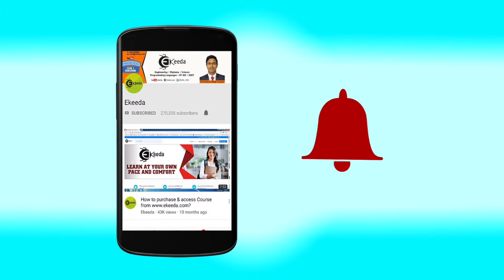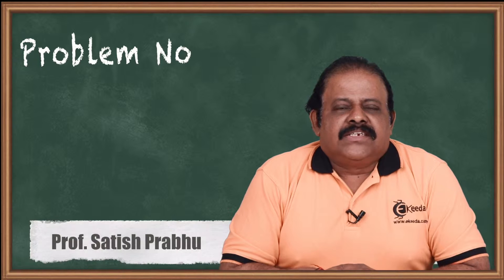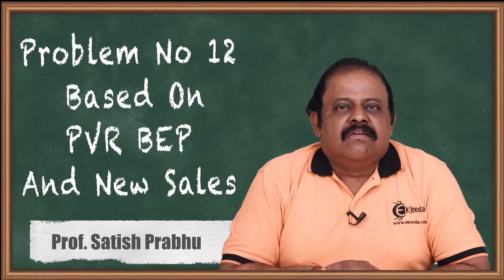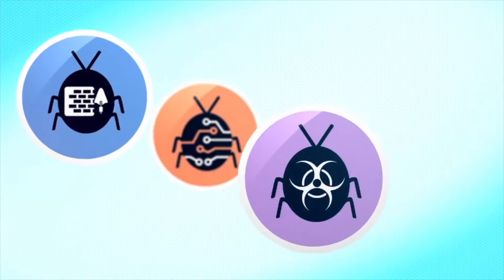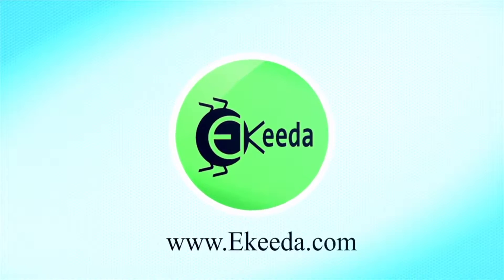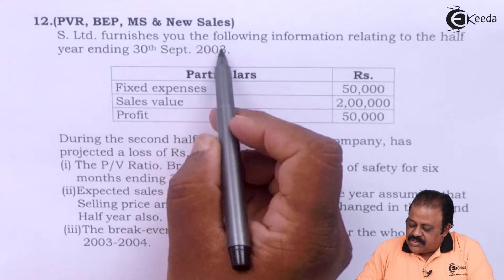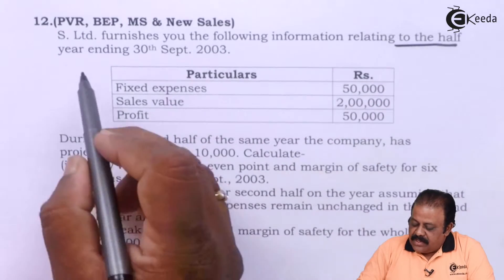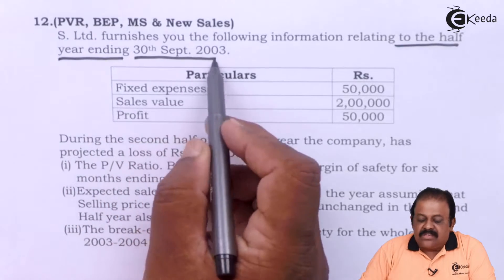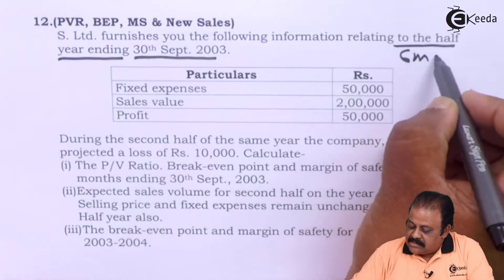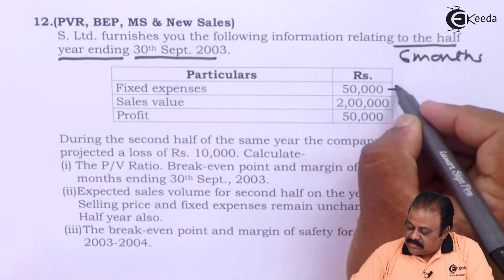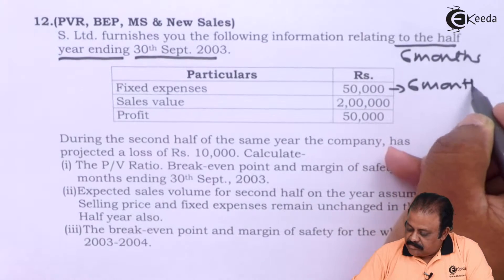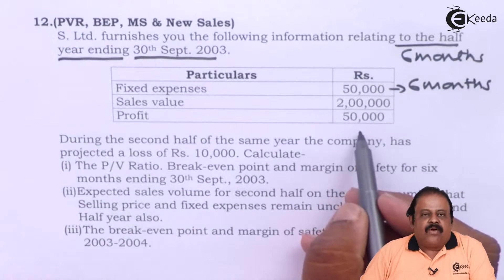Hello friends, today we'll be discussing one question of marginal costing where projected loss is given for the second half of the year. S Limited furnishes the following information relating to the half year ending 30th September 2003. Fixed expenses: 50,000 (for six months), sales value: two lakhs, profit: fifty thousand.